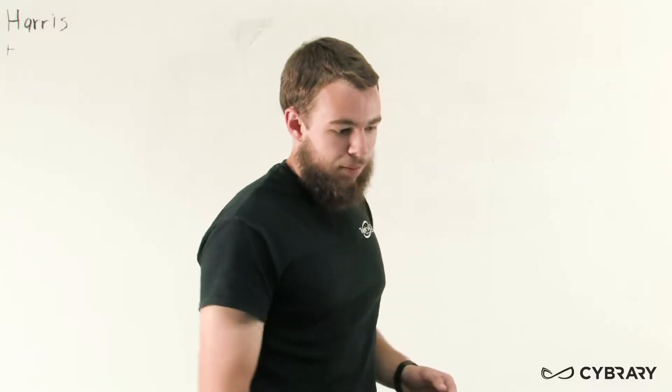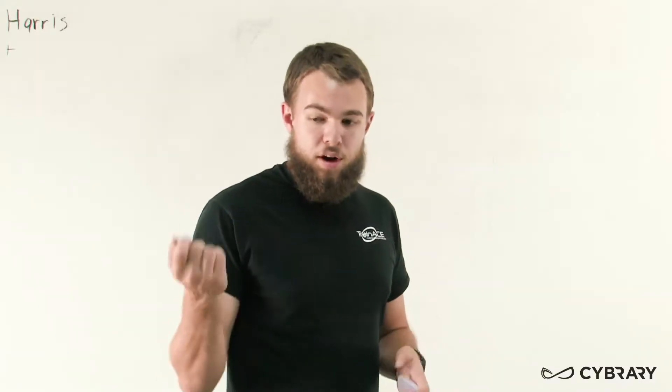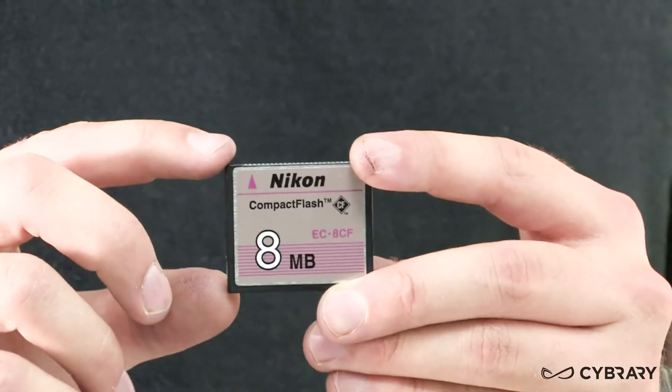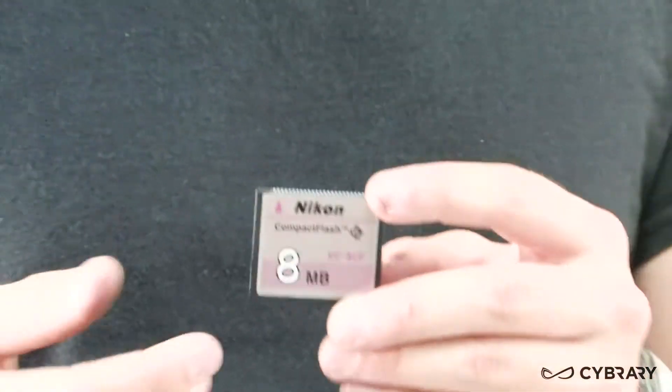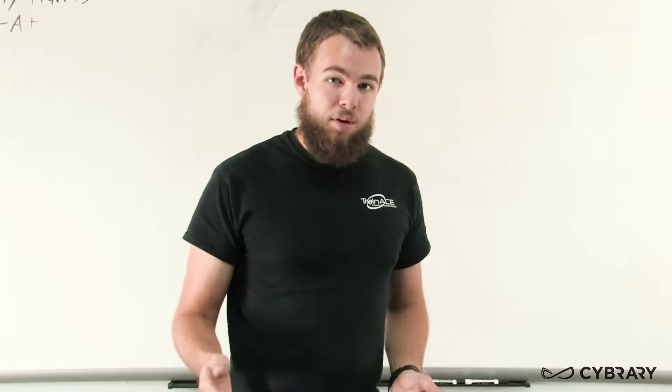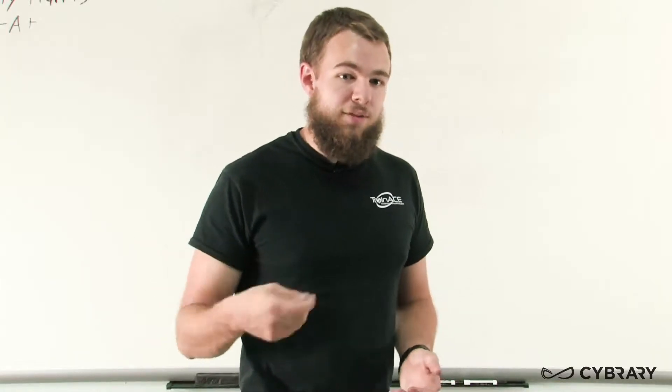Flash memory comes in a couple of different forms. For one, we have flash drives, which are normally used for instances where we just put memory on the drive and carry it around with us, say on a keychain. We also have compact flash, which is used quite often in high-end cameras such as DSLR cameras or in video recording systems where we want to quickly put information on the flash and then pull it off and put it on the computer.